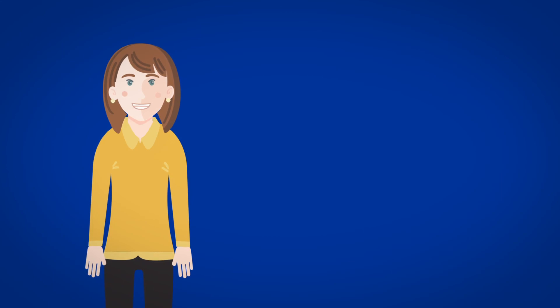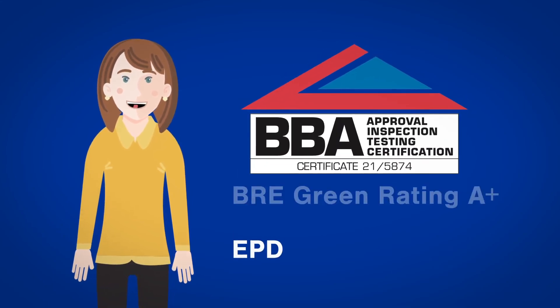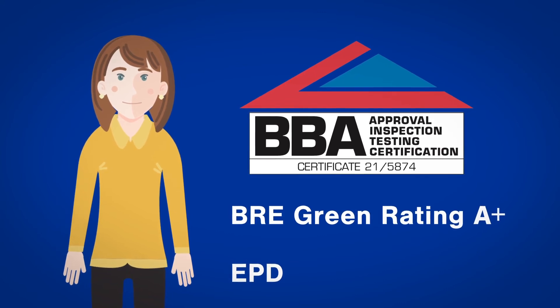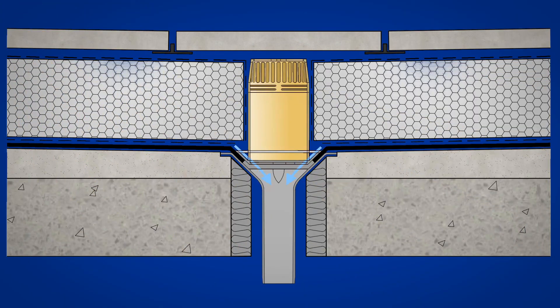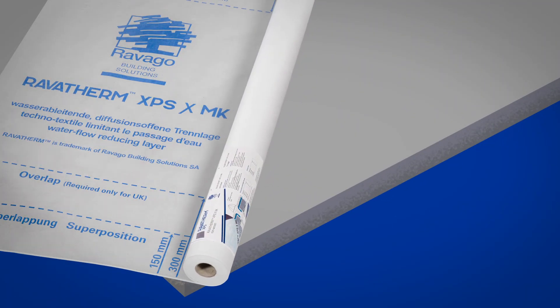They were the first extruded polystyrene insulation board to receive the following accreditations. They are all designed for use in conjunction with the Ravotherm XPSXMK Water Flow Reducing Layer, which helps to reduce the rainwater cooling effect.